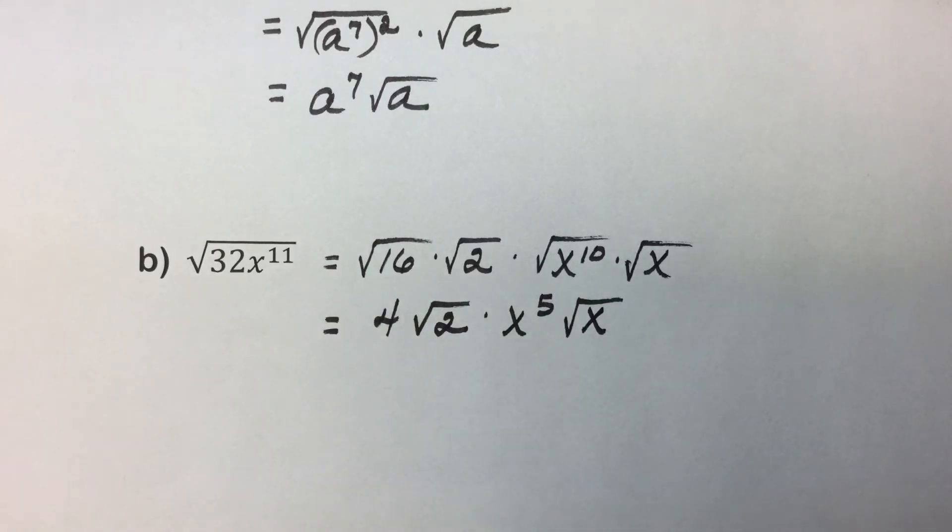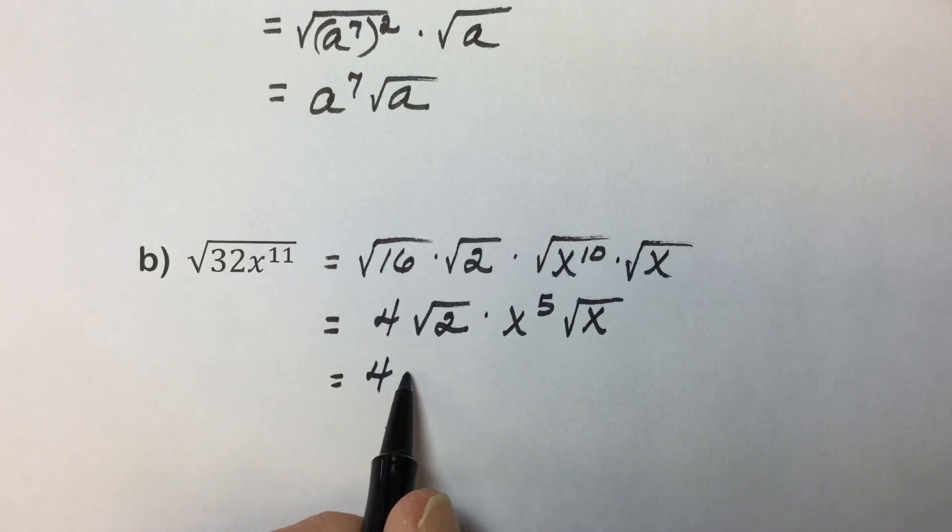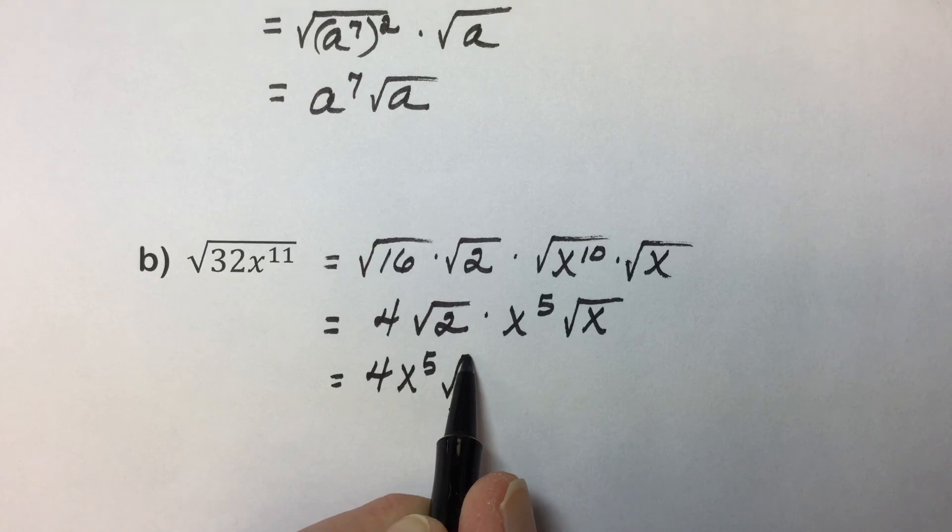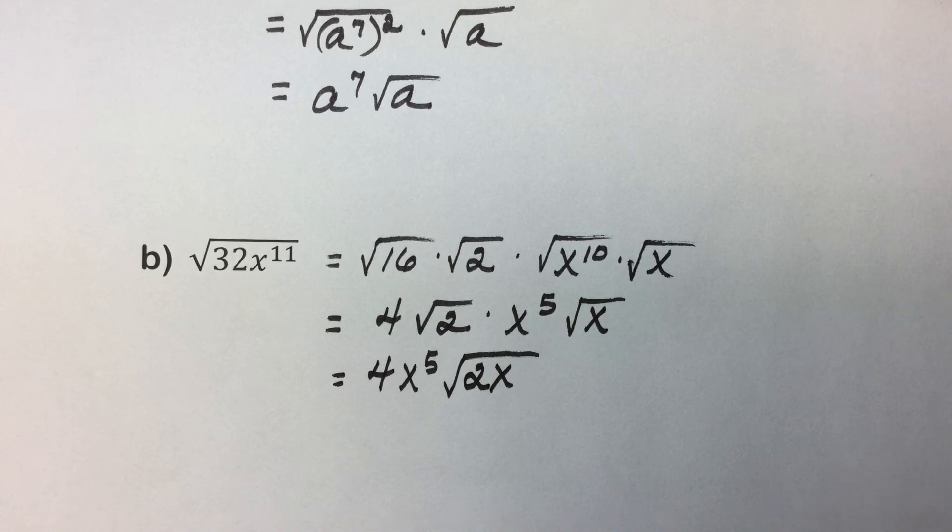Since there's only one factor, and the only factor is itself in one, we cannot simplify that. To avoid confusion as to what's underneath the radical and what isn't, we'll take our coefficients out in front for x to the fifth, and we'll multiply those two radicals together using the product rule under one radical sign for our final answer in simplified form. And we're done.